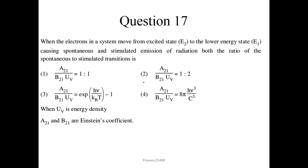Question number 17. When electrons move from excited state E2 to lower energy state E1, causing spontaneous and stimulated emission of radiation, the ratio of spontaneous to stimulated transitions is A₂₁ / (B₂₁ × U(ν)) = exp(hν / kBT) - 1. Option 3 is the correct answer.